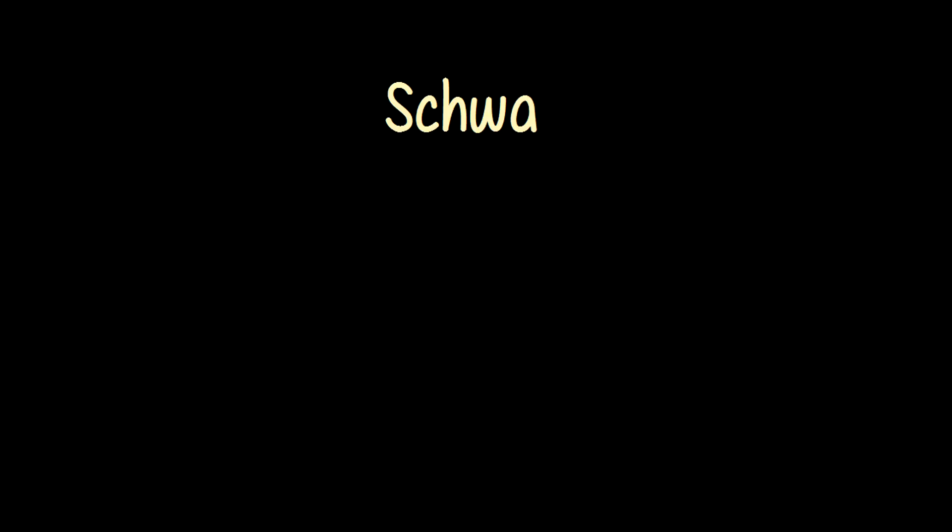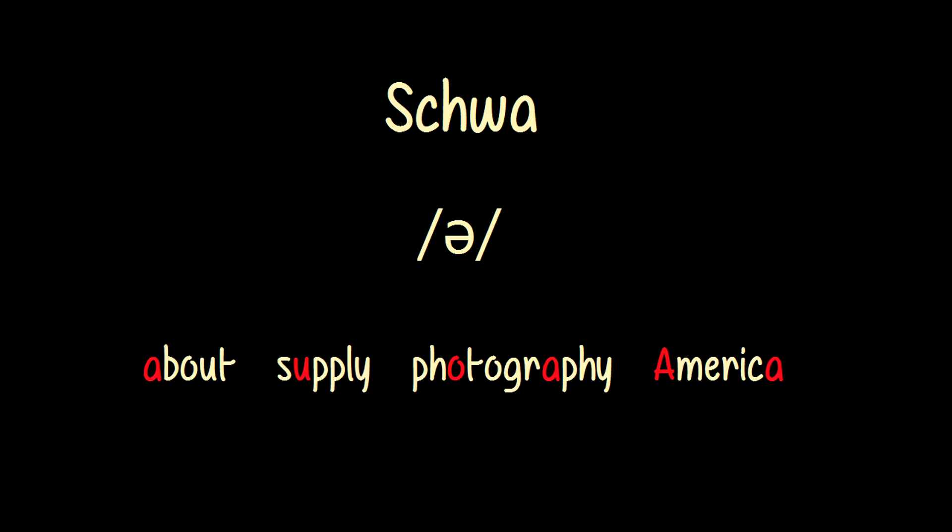The next thing I want to explain is the schwa, which is written phonetically as an upside-down E. A schwa is a completely unstressed vowel found abundantly in English. Basically, if you relax your entire mouth and make a noise, that's a schwa. Most people will recognize it as the sound people make when hesitating, but it's a common sound in English found in words such as 'about,' 'supply,' 'photography,' and 'America.'